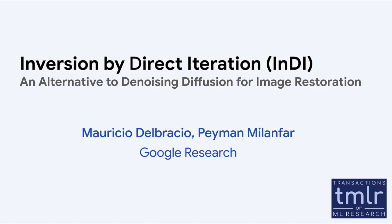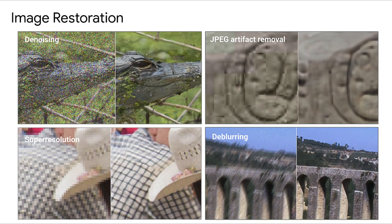We present Inversion by Direct Iteration, an alternative to denoising diffusion for image restoration. Image restoration is a process of generating a new high quality image from a low quality observation such that the generated image is compatible with the low quality input.